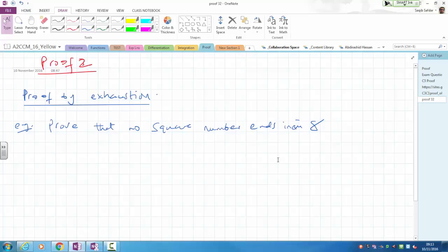No square number ends in an 8. Now obviously, we can't test every square number, we can't test every square number. That would be infinite. What can we do instead?